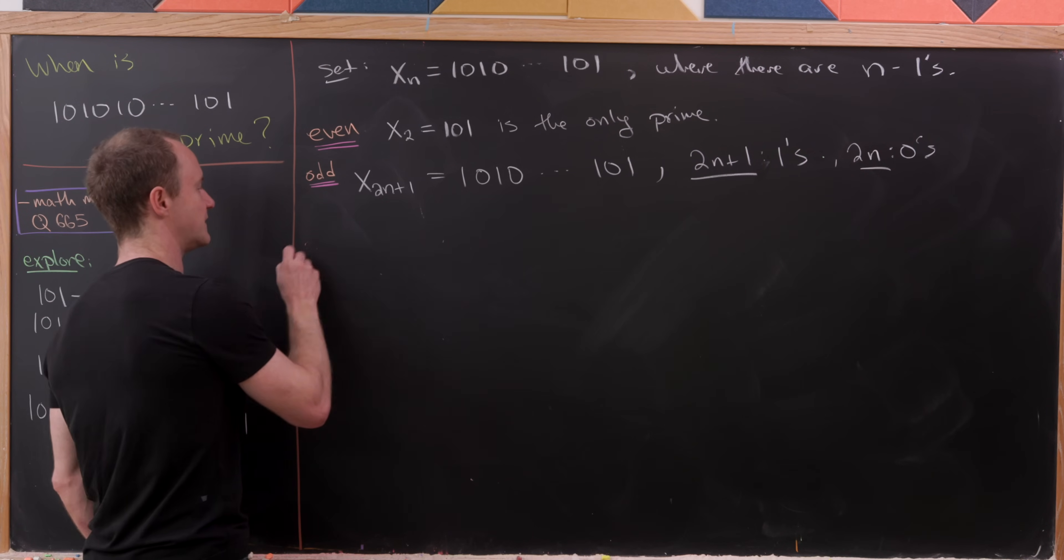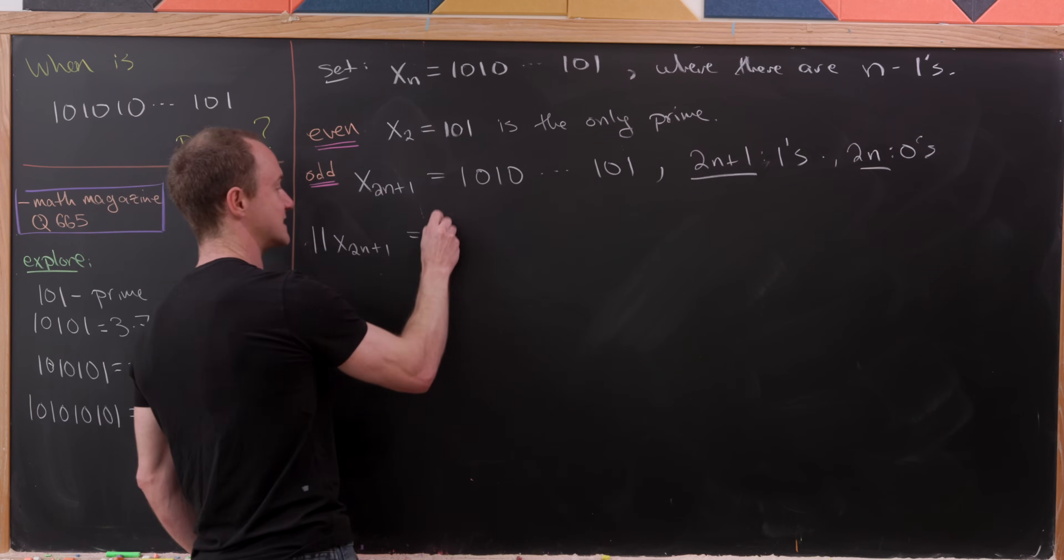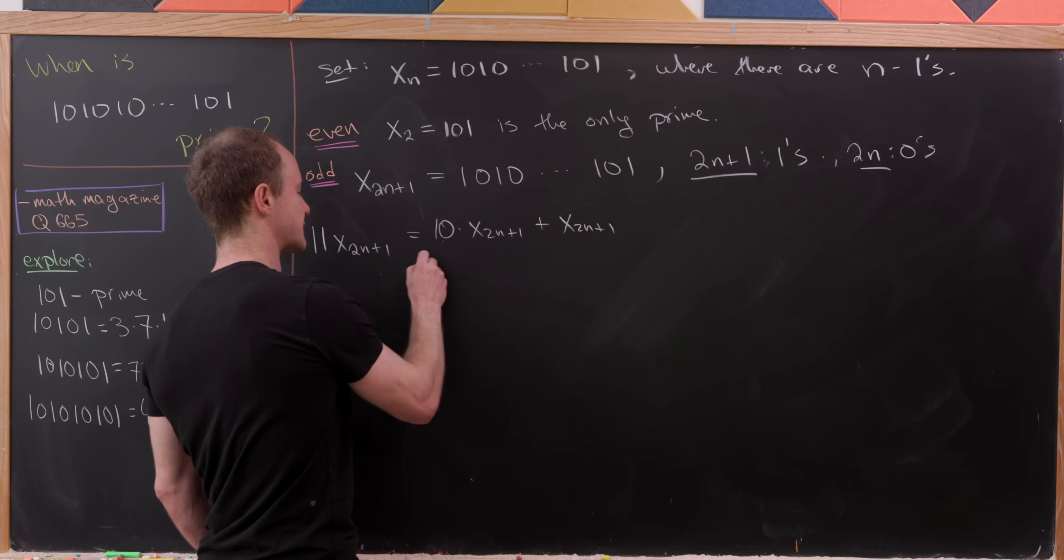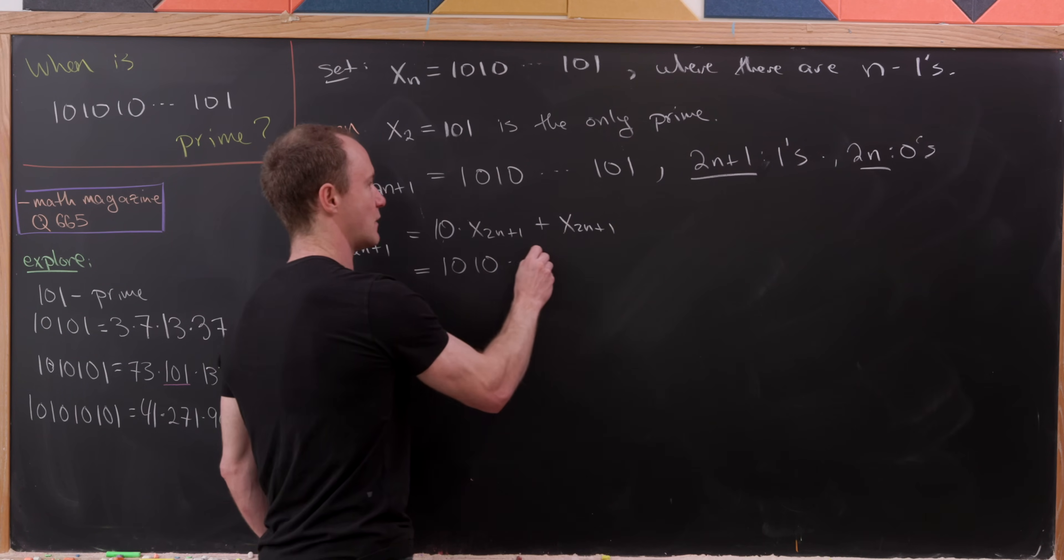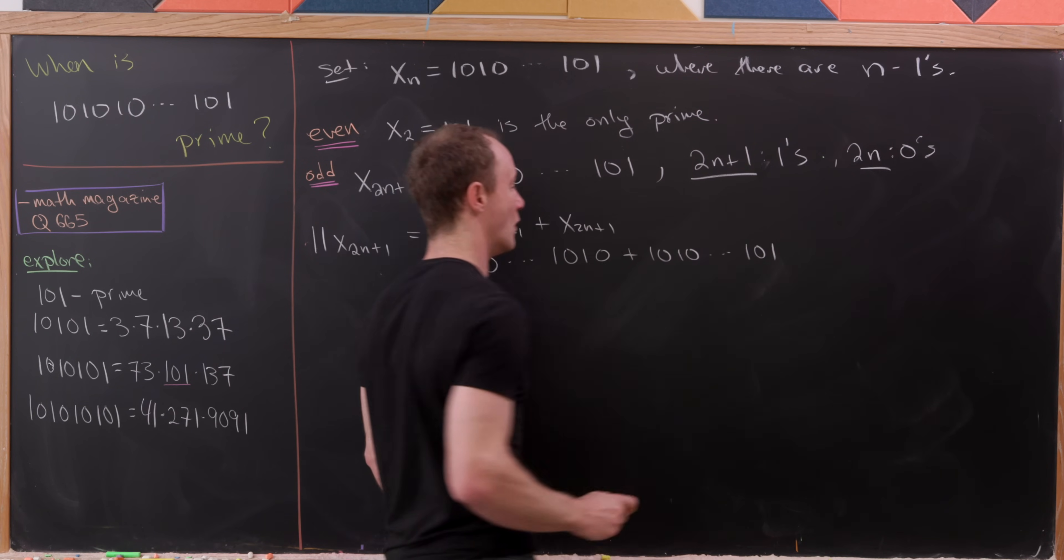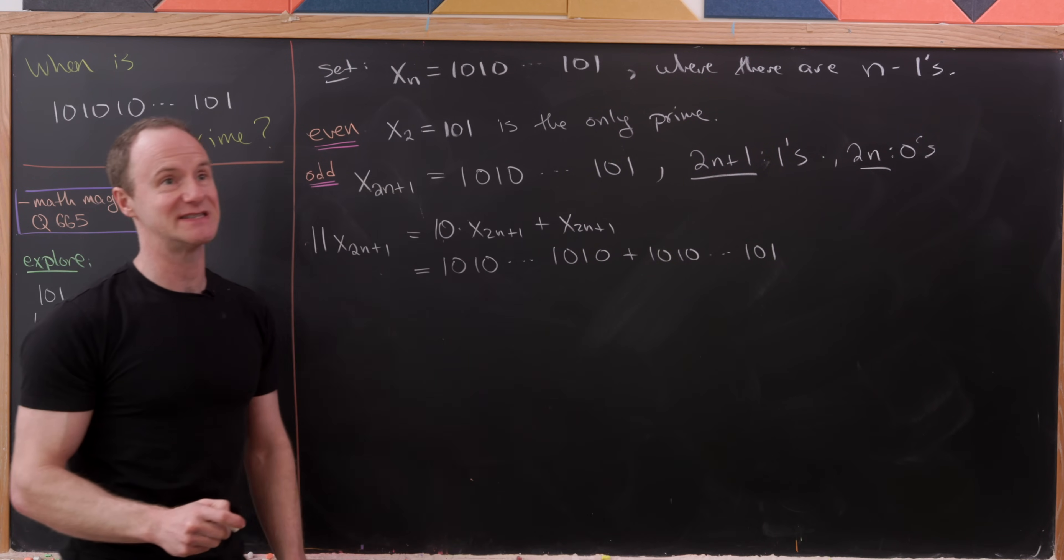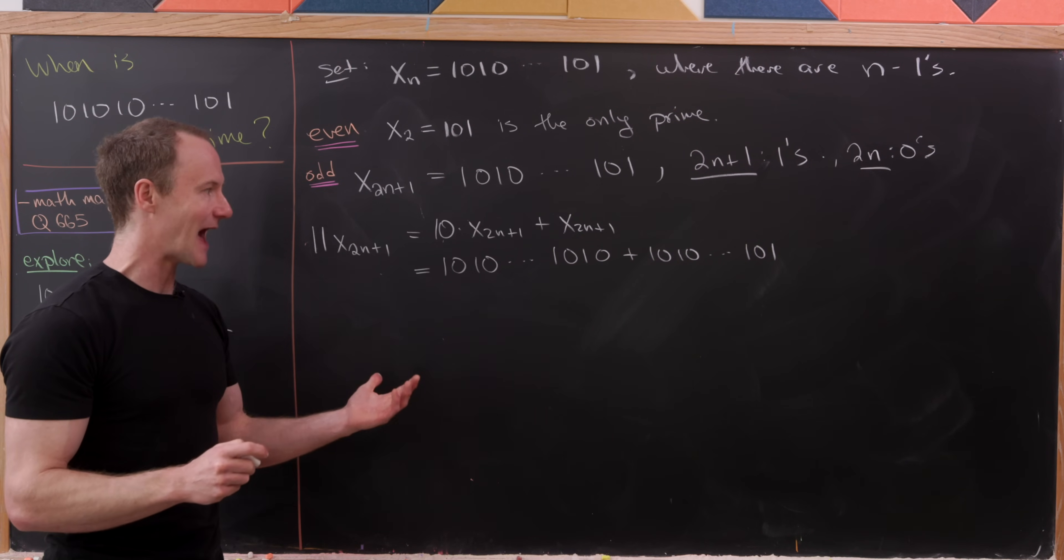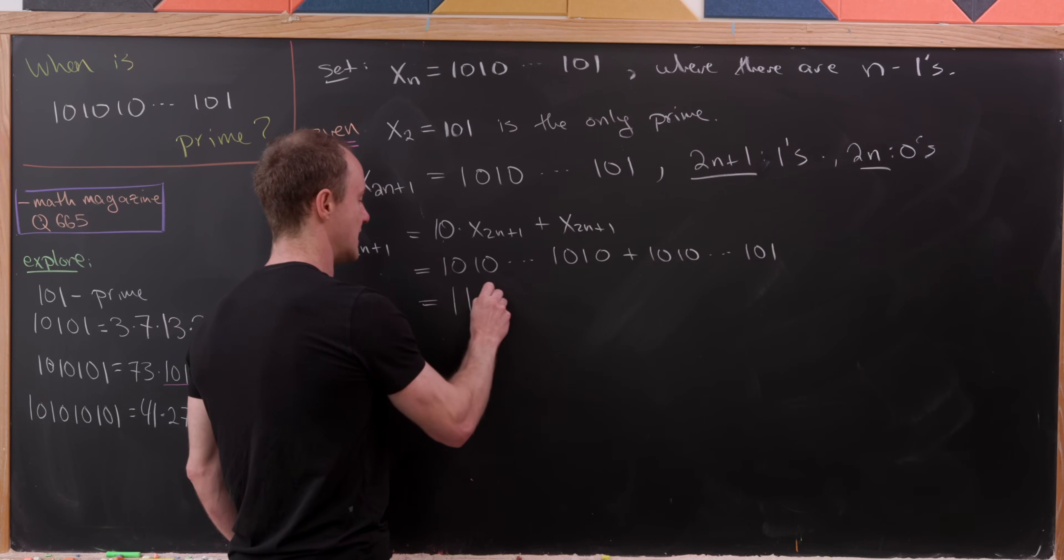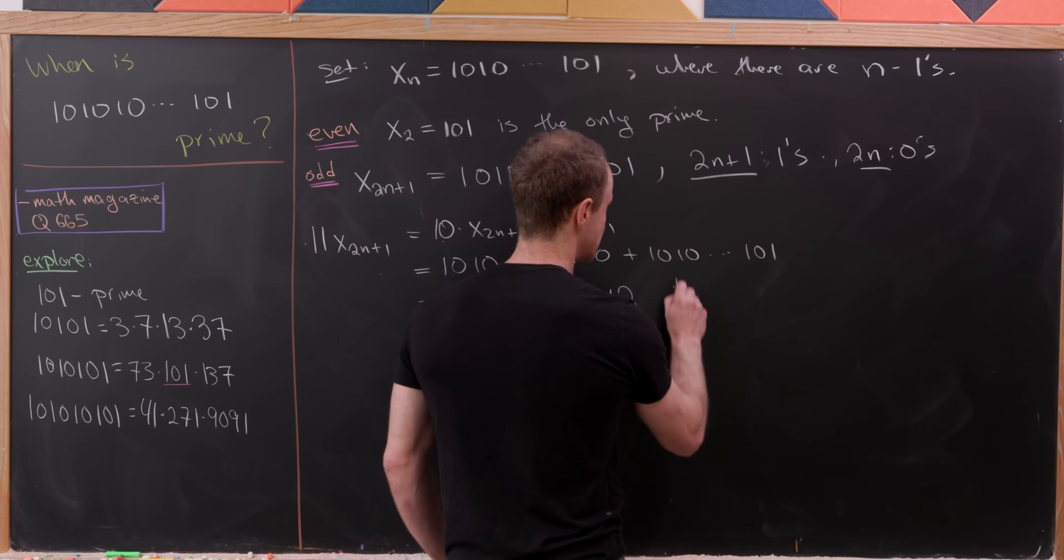So in the end, we have 4n plus 1 total digits. But now let's take advantage of the fact that there are an odd number of digits and do the following. Let's do 11 times x to the 2n plus 1, which can pretty clearly be written as 10 times x to the 2n plus 1 plus x to the 2n plus 1. So that's going to leave us with something like this. We'll have 1, 0, 1, 0, and so forth, 1, 0, 1, 0, and then plus 1, 0, 1, 0, and so forth, 1, 0, 1. The important thing is that we've shifted x sub 2n plus 1 over a little bit. We've put a 0 at the extreme right-hand side. But that means when we add these together, a 1 is always combining with a 0. So in the end, we'll just get a number which is a repeated digit of 1. And in fact, there are exactly 4n plus 2 total digits.